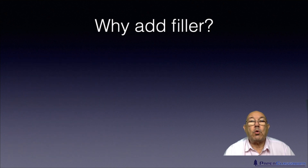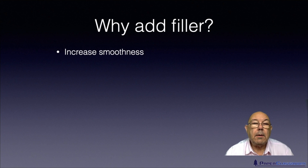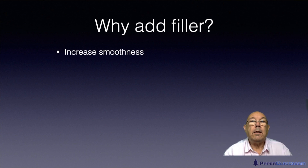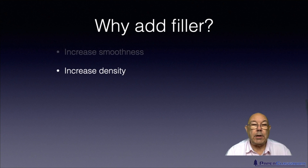So the first question is: why do we add fillers? Well, there are quite a few reasons. We use them to increase the smoothness of the sheet — with just the fibre there you've got lots of hills and valleys, and the fillers fill in those valleys to give you a great improvement in sheet smoothness. We also use fillers to increase the density of the sheet and get rid of all those air spaces.